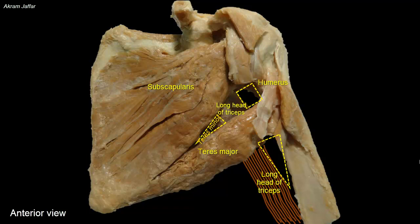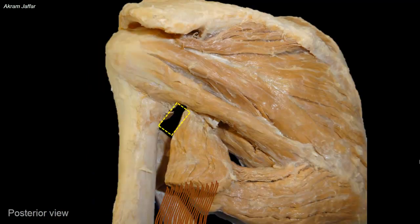The other triangular space is inferior to the quadrangular space. It is inferior to teres major muscle, and the remaining two boundaries are the humerus — the shaft of the humerus — and the long head of triceps.